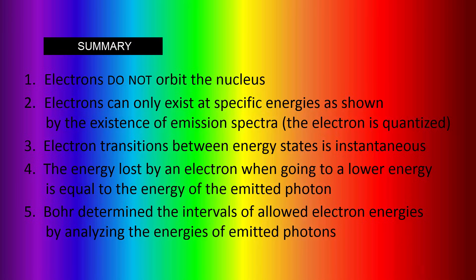So, electrons do not orbit the nucleus. Electrons can only exist at specific energies as shown by the existence of emission spectra. In other words, the electron is quantized. Electron transitions between energy states is instantaneous. In other words, the electron cannot exist in between those energy states. The energy lost by an electron when going to a lower energy is equal to the energy of the emitted photon. Bohr determined the intervals of allowed electron energies by analyzing the energies of emitted photons.